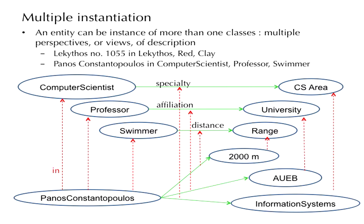An instance need not be an instance of a single class — an instance can be an instance of more than one class, because we describe it from multiple perspectives or views. This is called multiple instantiation. For example, Lekithos number 1055 can be classified as a Lekithos, but it can also be classified as a red object or as a clay object.